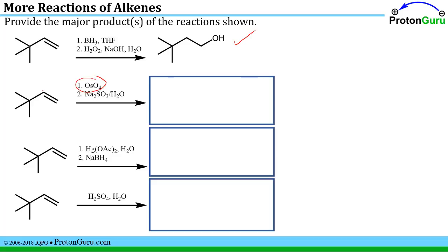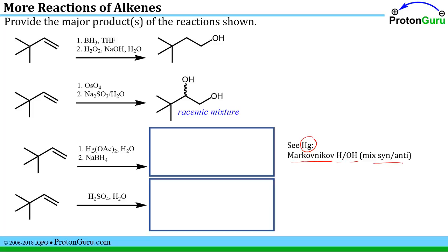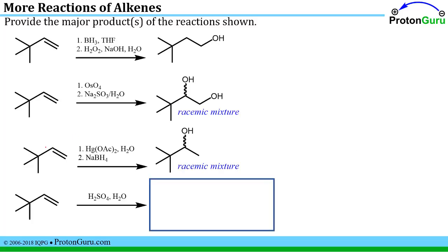For the second problem we see osmium, so we know we're going to end up getting rid of the double bond and adding an OH to each side. In this case we do generate a chiral center, so we'd have a 50-50 mixture of the R and S isomers—a racemic mixture. For the mercury conditions, that cues us into doing a Markovnikov addition of an H and an OH, with a mix of syn and anti addition. We put an OH on the more substituted and an H on the less substituted, generating a chiral center and a racemic mixture.